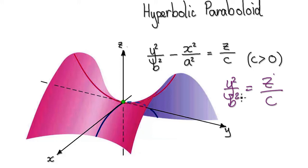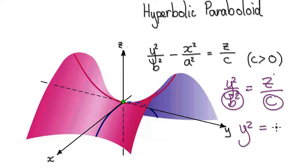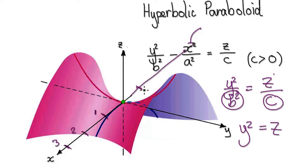That gives you y² equals z over c. Let's just imagine b equals 1 and c equals 1 for simplicity. So you've got something looking like this — positive 1, positive 2, positive 3, and negative 1, negative 2, and so on.